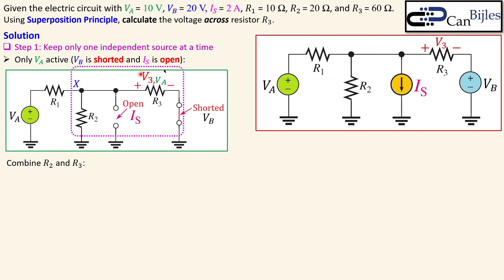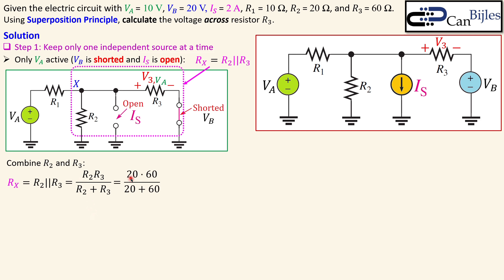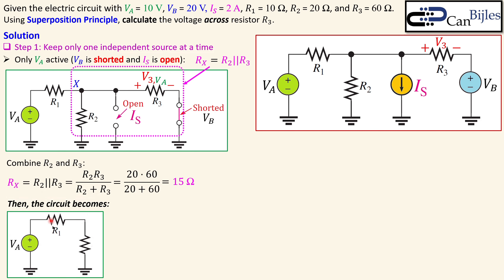We combine R2 and R3, labeling their common node as X. I call these two resistors combined Rx. Using the parallel resistor formula with R2 = 20 ohms and R3 = 60 ohms, we get Rx = 15 ohms effectively for this part of the circuit.